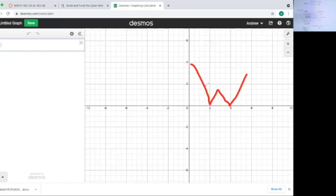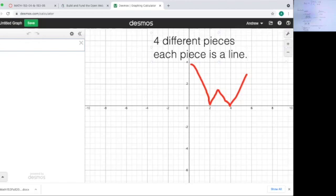So how many different pieces do you see here? You see four different pieces and each piece is a line, right? Okay, I'm going to make a piecewise function that has four different linear pieces. There's a point right here at (0,4) that could be helpful to me.